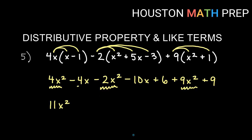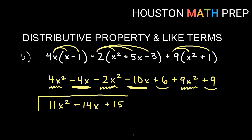For the x terms: negative 4x and negative 10x — so negative 4 minus 10 gives negative 14x. For the constants: positive 6 plus positive 9 gives plus 15. Our fully combined final answer is 11x² − 14x + 15, with all x² terms, x terms, and constants combined.